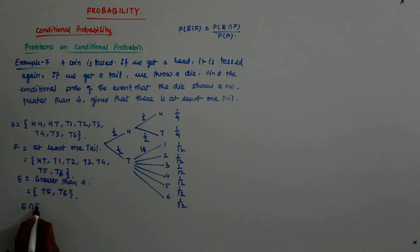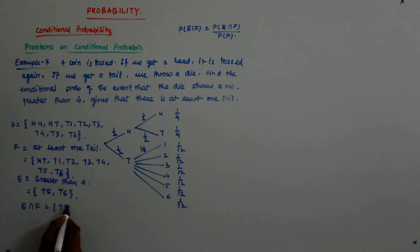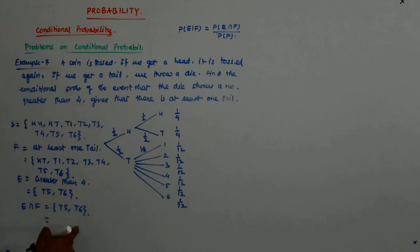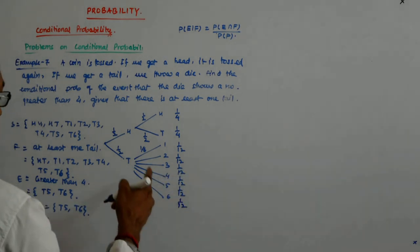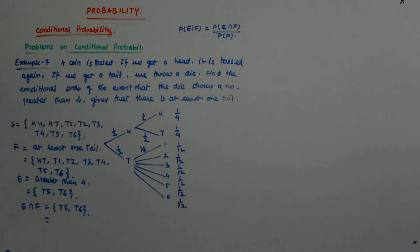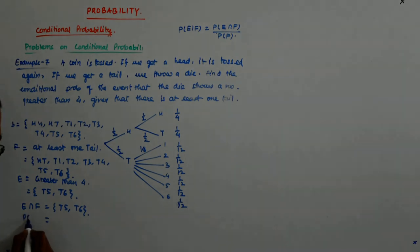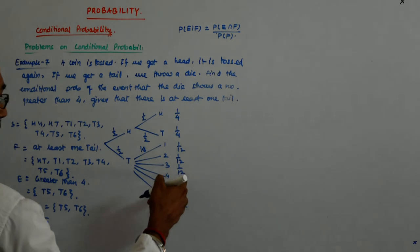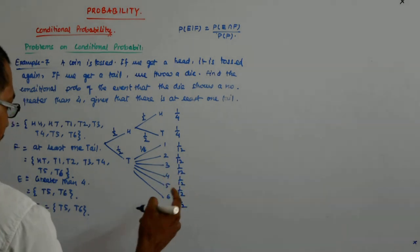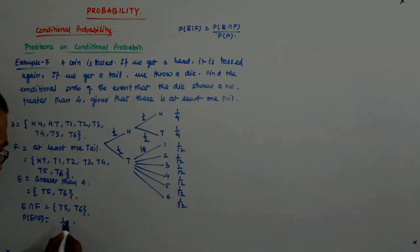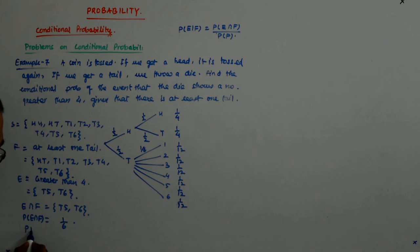A number greater than four is T5 and T6. So E intersection F is T5 and T6. What is their probability? 1 upon 12 and 1 upon 12, right? So P(E∩F) is 1 upon 12 plus 1 upon 12, which is 1 upon 6.